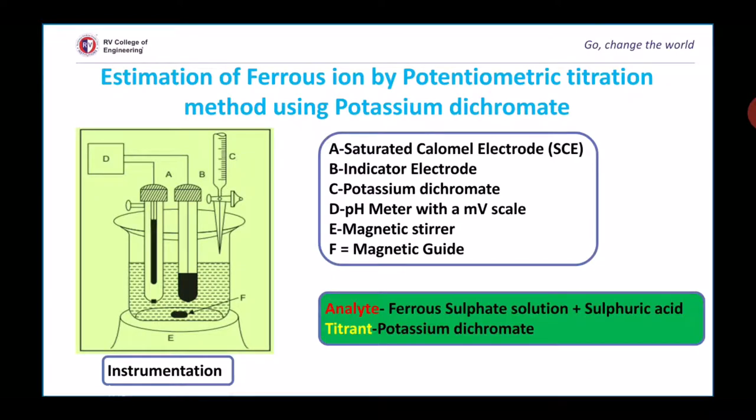Analyte is ferrous sulfate solution and a little amount of sulfuric acid, because ferrous sulfate acts as reducing agent only in presence of sulfuric acid medium or acidic medium. Titrant is potassium dichromate.